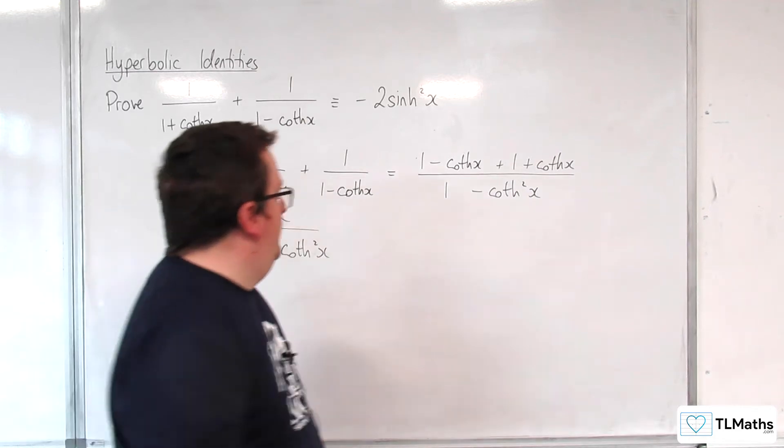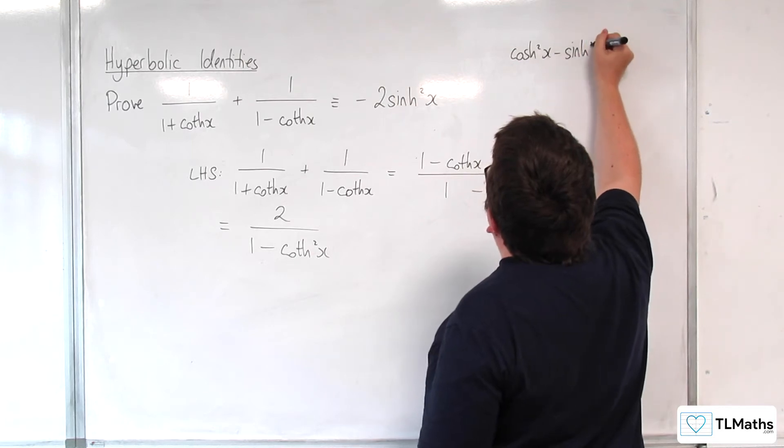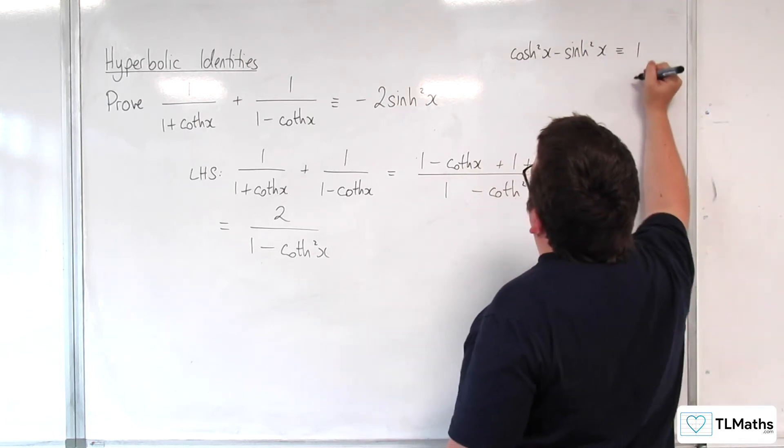Let's recall our trig identity, shall we? So coth squared x take away sinh squared x is equivalent to 1.